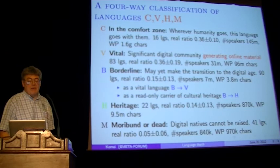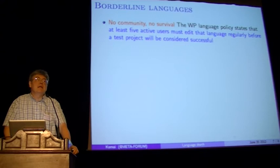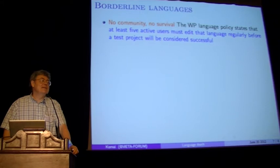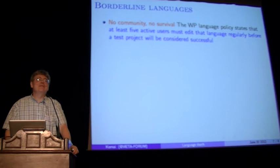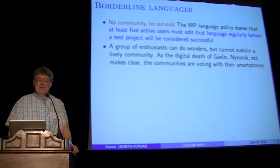A few more words about the borderline languages. If there is no community, there is no survival — that's already axiomatic under the understanding of classical language death. The Wikipedia language policy could not be more lenient: at the time, it demanded at least five active users to edit the language regularly; by now they have decreased this number to three. So if your community is even vestigially there, you can do something about it. People here may remember the Klingon Wikipedia — if you have a group of enthusiasts, they can do wonders, but they cannot sustain a lively community.